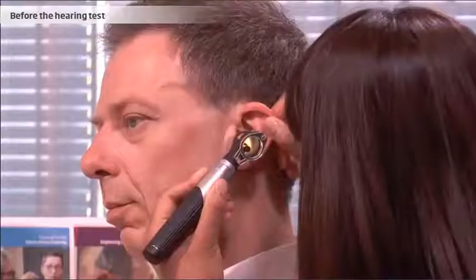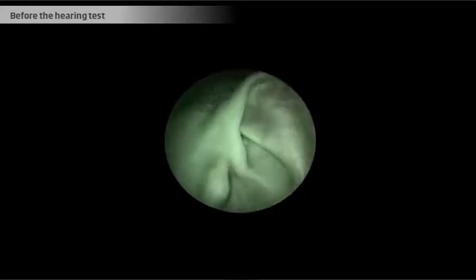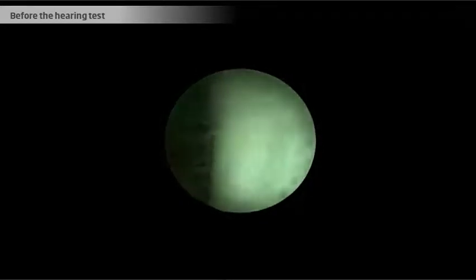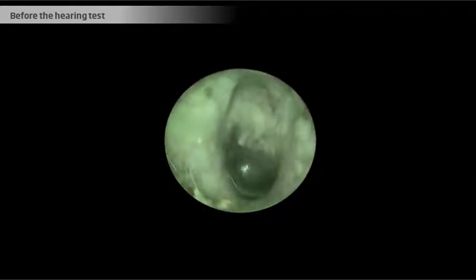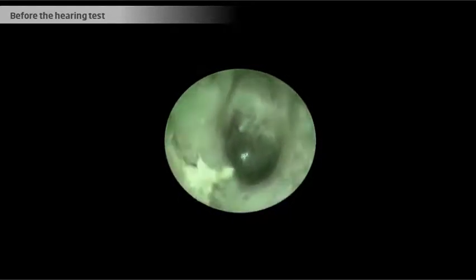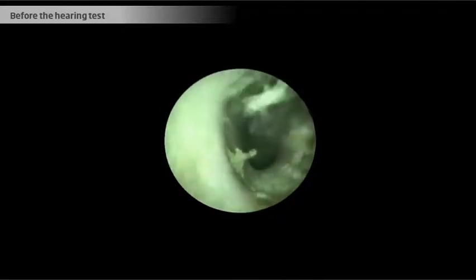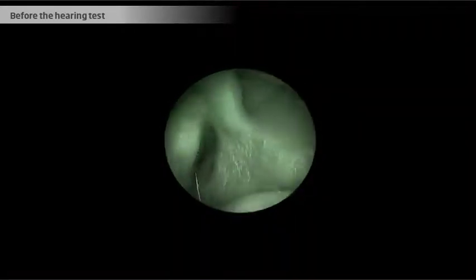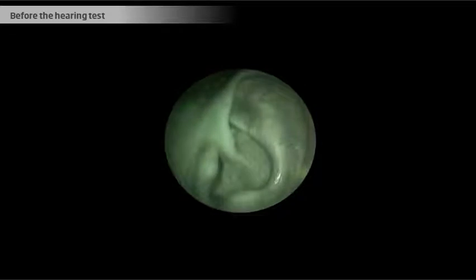Before beginning the hearing test, the hearing care professional will perform otoscopy by using an otoscope to look into the ear canal. This is to ensure that the ear canal is free from any obstructions in the outer ear. For example, excessive earwax could prevent a true image of the client's hearing ability. The otoscopy will also disclose any medical conditions that could require consulting a doctor.